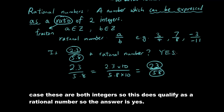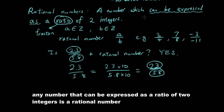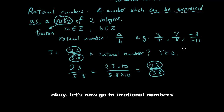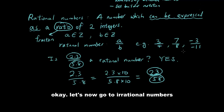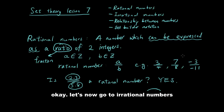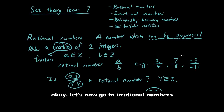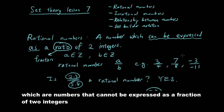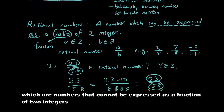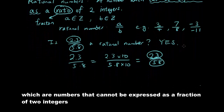So the answer is yes — any number that can be expressed as a ratio of two integers is a rational number. Now let's go to irrational numbers, which are numbers that cannot be expressed as a fraction of two integers.